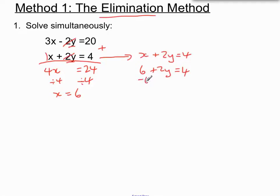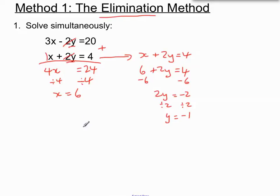To solve this equation, we would want to move the 6 by minusing both sides. That will leave us with 2y equals 4 minus 6, which is minus 2. And we'll divide both sides by 2 to have y on its own — minus 2 divided by 2 is minus 1. We would usually just write down the solution together, so the solution to these simultaneous equations is x equals 6 and y equals minus 1.